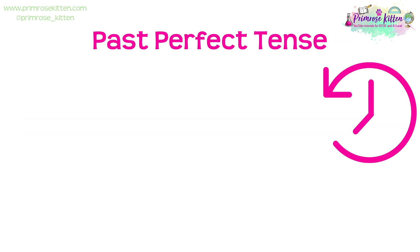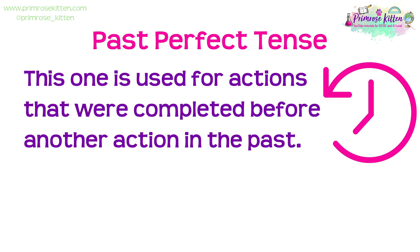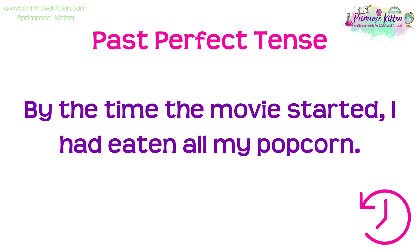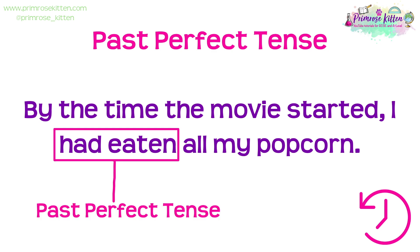Next up we have the past perfect tense. This one is used for actions that were completed before another action in the past. For example: 'By the time the movie started, I had eaten all my popcorn.' Here, 'had eaten' shows that I finished my popcorn before the movie even started. The past perfect tense is all about what happened first in the past. To form the past perfect tense, you use 'had' plus the past participle.